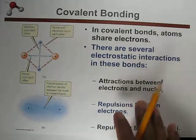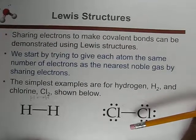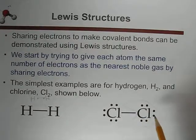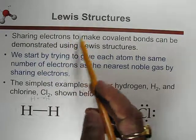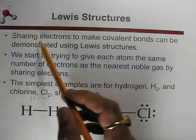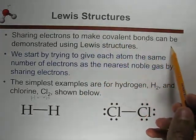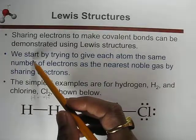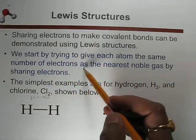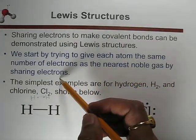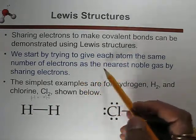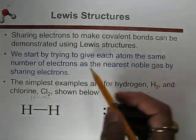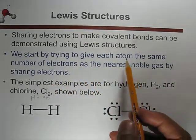Lewis structure is used to demonstrate the covalent bond. In covalent bonding, two atoms share electrons to form the bond, which can be demonstrated by Lewis structure. We try to give each atom the same number of electrons as the nearest noble gas by sharing electrons. It is important how many electrons we need to share between two atoms.